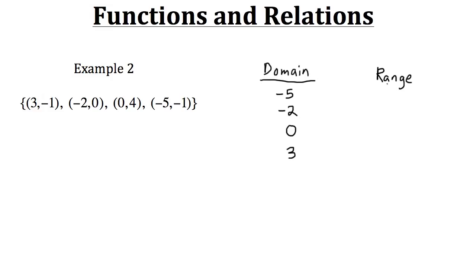The range is very similar except we're looking at the outputs, not the inputs. Starting with the least number, that would be negative one. Notice negative one shows up twice, but we don't need to write it down twice — we just need to say negative one is within the range. Then the next number is zero, and also four. So within this relation we have three different possible values for our range: negative one, zero, and four.